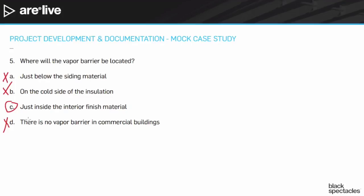Interestingly, these were called vapor barriers for a long time. Then about 20-30 years ago, people felt like the word 'barrier' was kind of a lie, because the vapor will always get through to some degree. So they started being called vapor retarders, which was considered a better way of thinking. But then a few years back, all the terminology switched back to vapor barriers. You'll still find a lot of people referring to them as vapor retarders, but the exam now calls them vapor barriers.